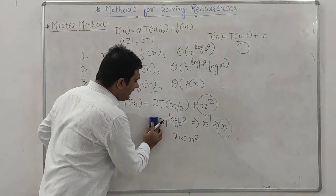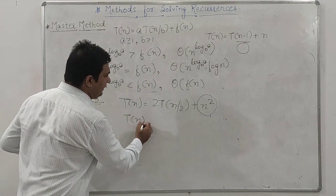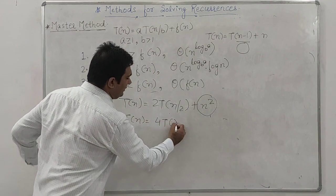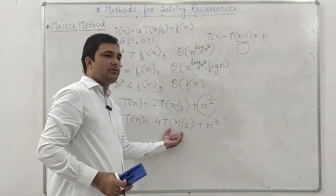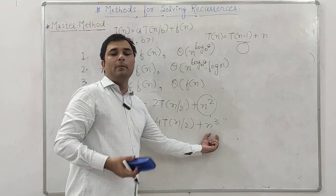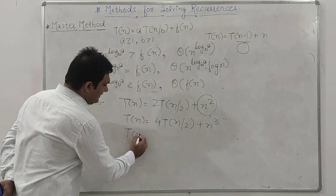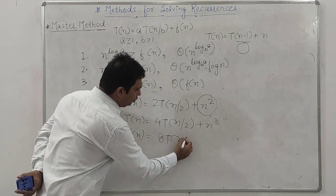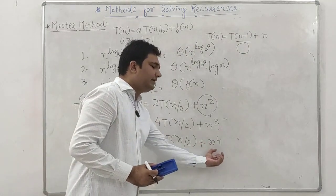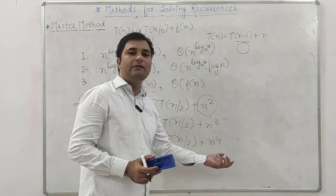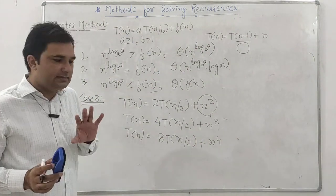Continuing Case 3: T(n) = 8T(n/2) + n^4. Here n^(log_2(8)) = n^3, which is less than n^4, so the running time is Theta(n^4). These are examples of Case 3. So far f(n) has been a polynomial function — n, n^2, n^3 — but f(n) can also be a combination of polynomial and logarithmic terms, or even exponential.